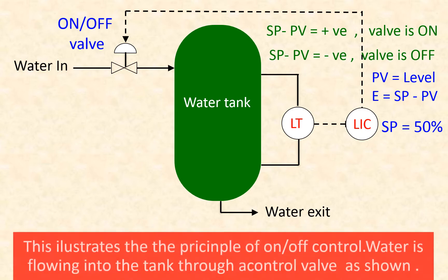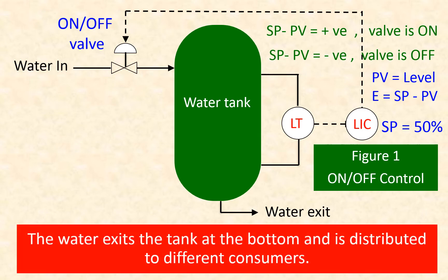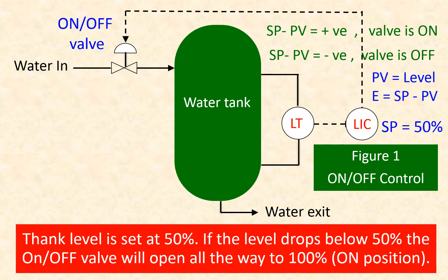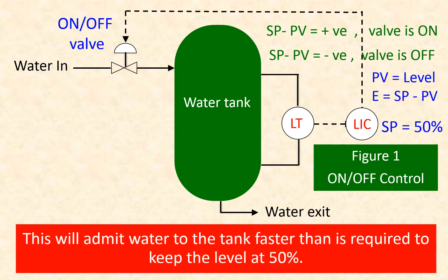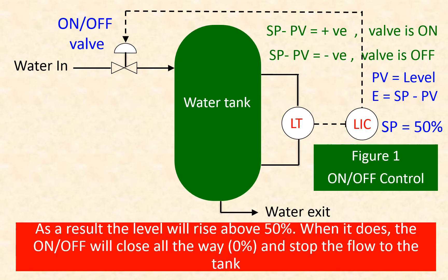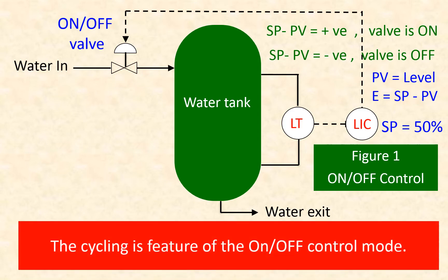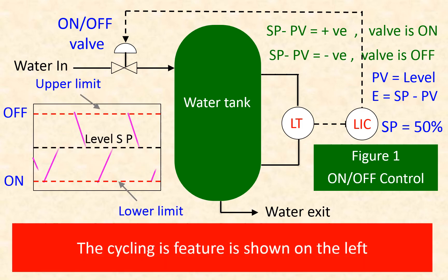This figure illustrates the principle of on-off control. Water is flowing into the tank through a control valve. The water exits the tank at the bottom and is distributed to different consumers. The tank level is set at 50%. If the level drops below 50%, the on-off valve will open all the way to 100%. This admits water to the tank faster than required to keep the level at 50%, so the level will rise above 50%. When it does, the on-off valve will close all the way to 0% and stop the flow. With no water flow, the tank level will drop and the cycle will repeat. This cycling is a feature of the on-off mode, shown on the left of the tank with the animation.